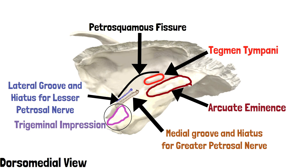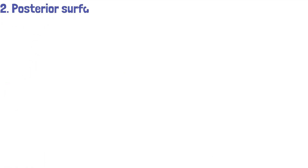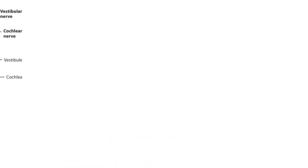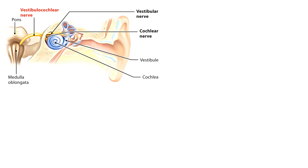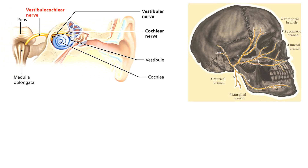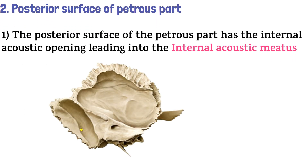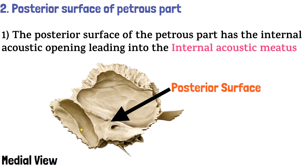With this, we complete the anterior surface of the petrous part and move on to the posterior surface. The posterior surface of the petrous part has the internal acoustic opening, leading into the internal acoustic meatus. It allows for the passage of three important structures: the vestibulocochlear nerve, the facial nerve, and the labyrinthine artery. In the medial view, this surface is marked as the posterior surface, and this hole is the internal acoustic meatus. This completes the posterior surface, and we move on to the last surface, which is the inferior surface.